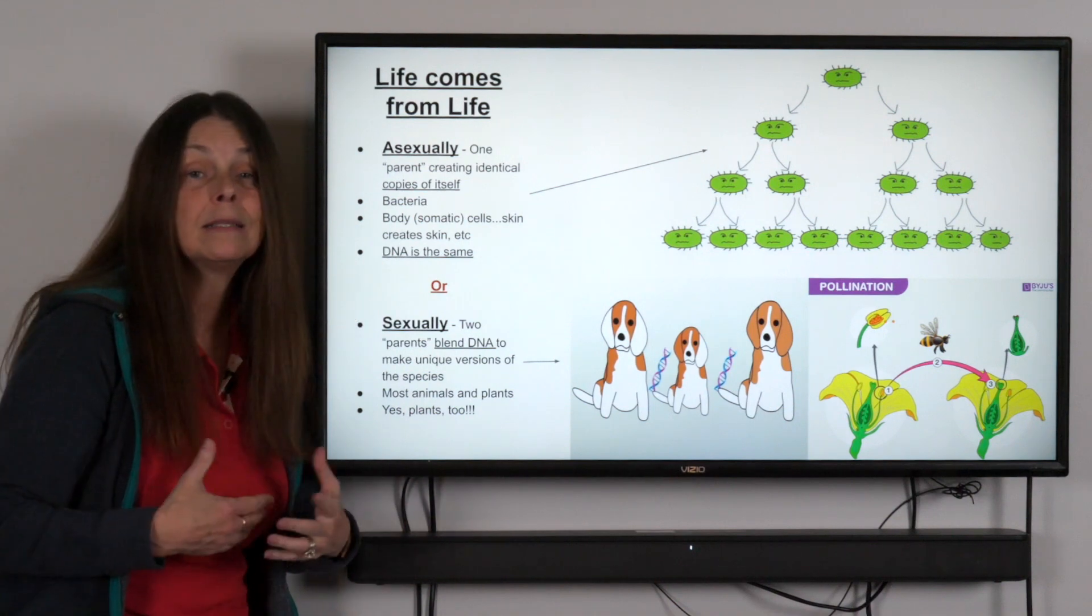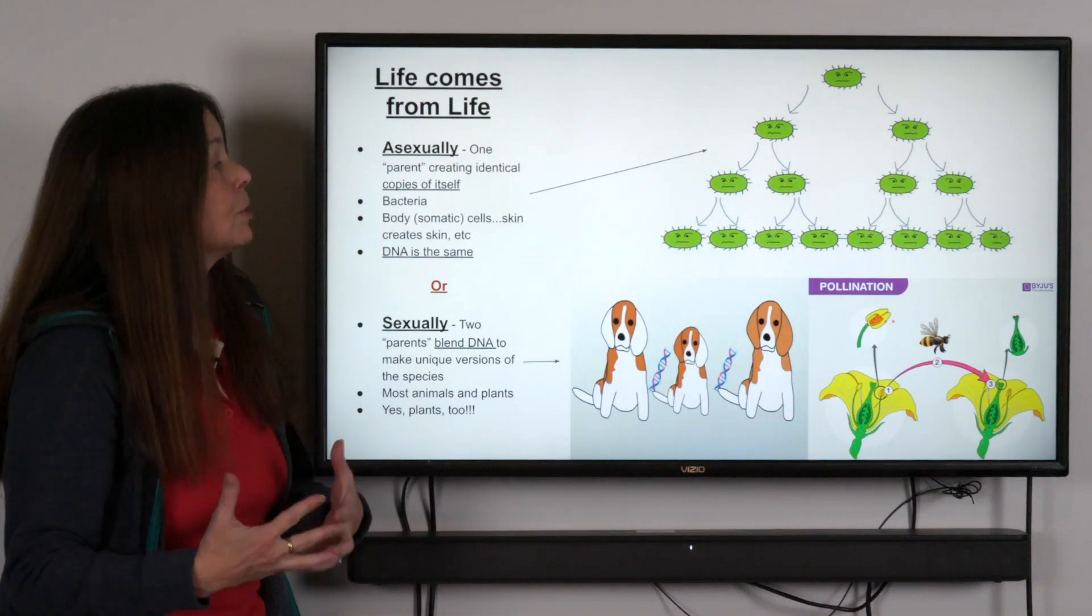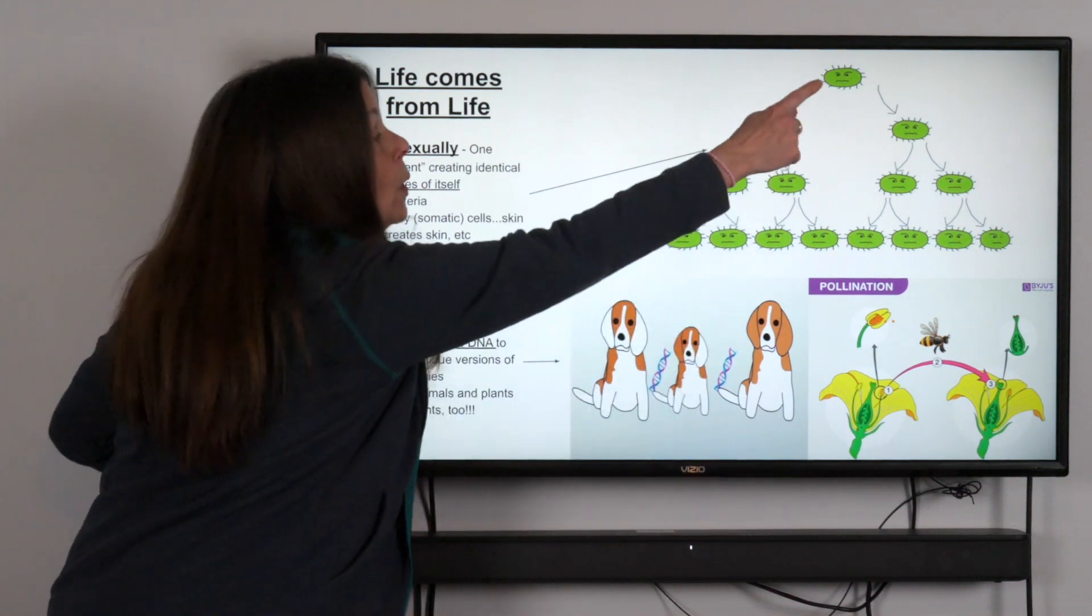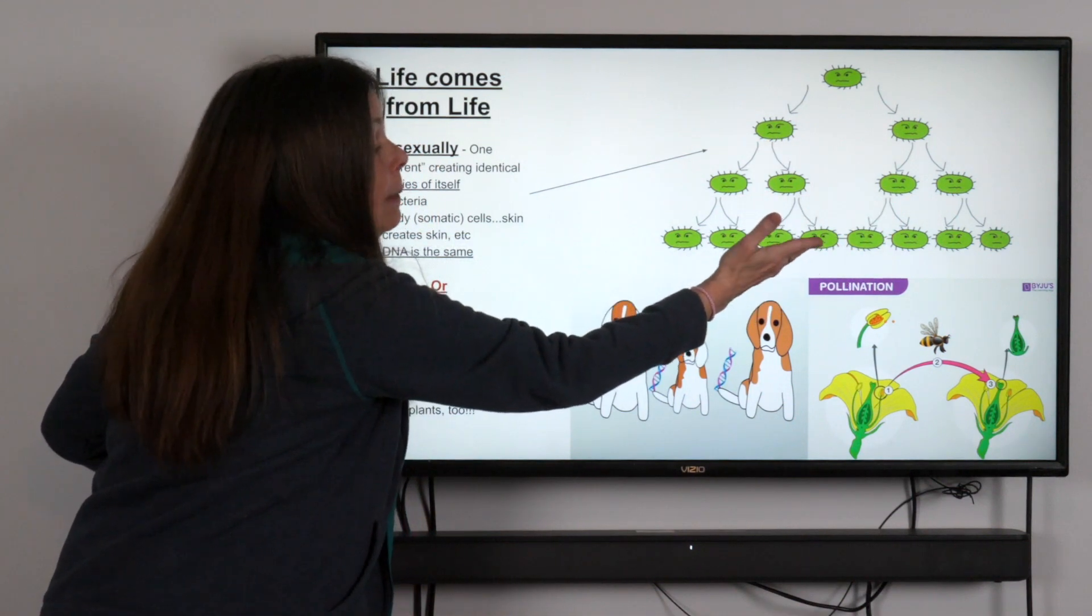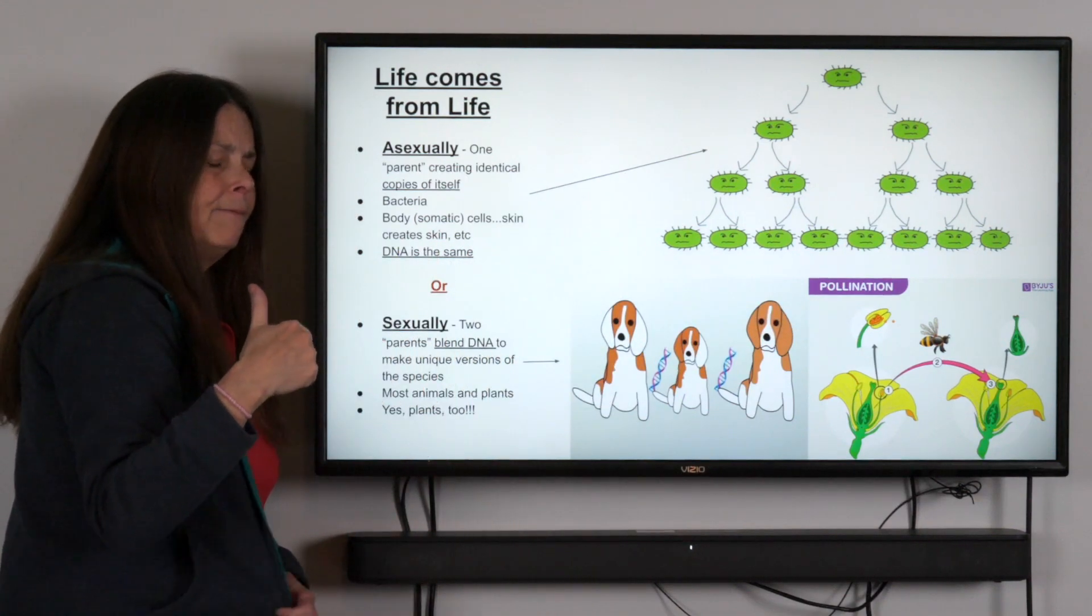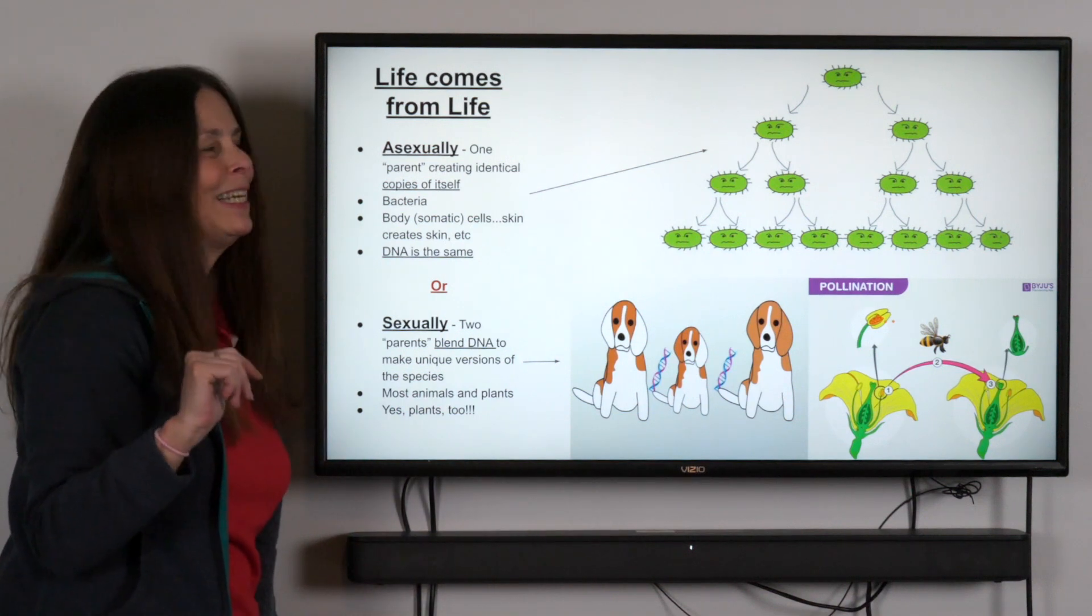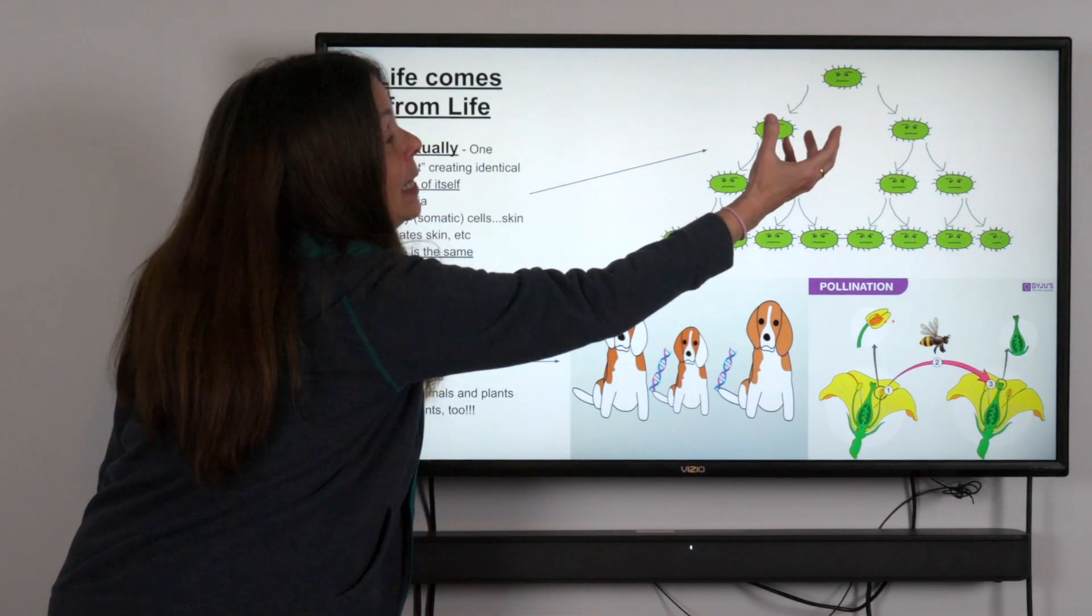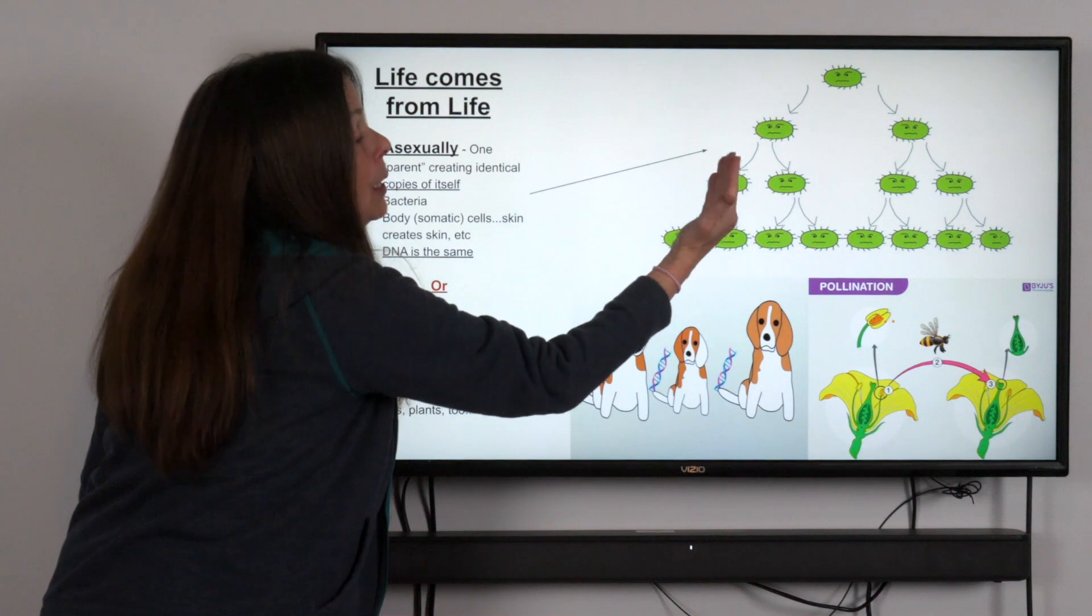Some species reproduce asexually. They're creating identical copies of themselves, sort of like going through the copy machine where one becomes two, and then two become four, and then four become eight, and then eight becomes 16, 32, 64, 128. Each individual gets to a certain size and then they become two smaller versions of themselves, which will then grow and divide.